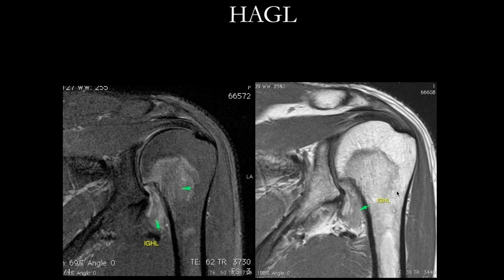Another structure to look at carefully is the inferior glenohumeral ligament in the axillary recess region, which can be injured during dislocation. For the surgeon going in arthroscopically, this is an area which is difficult to visualize, so he wants to know beforehand if it is intact. Here you can see the normal inferior glenohumeral ligament as a well-defined thin hypointense band, but at the humeral attachment it is torn. This is called HAGL — humeral avulsion of glenohumeral ligament. A similar injury at the glenoid side is called GAGL — glenoid avulsion of glenohumeral ligament.